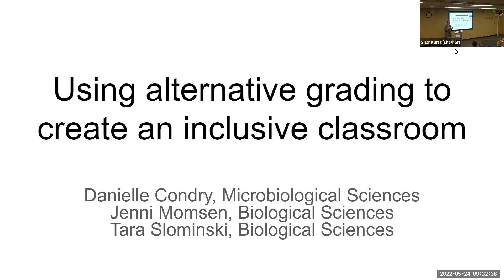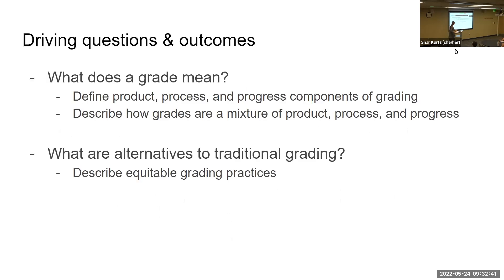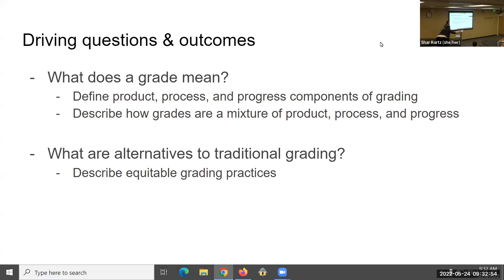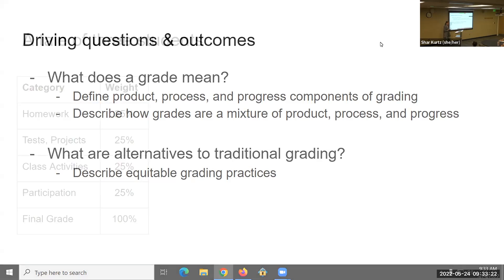To begin today, we want to start by sharing our driving questions and then jumping into a tale of three students. We'll think about what a grade means and discuss components of grading — product, process, and progress — define those, and help you think about what your grade is communicating to students. Then we'll talk about how grades tend to be a mix of product, process, and progress, and we'll spend time thinking about alternatives to traditional grading that are more equitable.